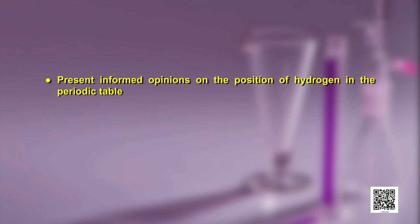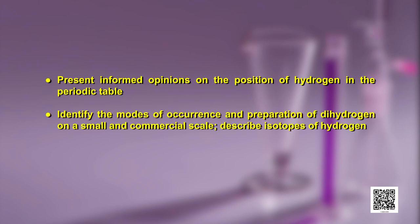Welcome learners to this program on hydrogen, which is discussed in unit 9 of class 11th chemistry book part 2. We will explain the chemistry of hydrogen in a series of 4 programs, and today we will focus on the position of hydrogen in the periodic table, occurrence of hydrogen called dihydrogen, then isotopes of hydrogen and preparation of dihydrogen.